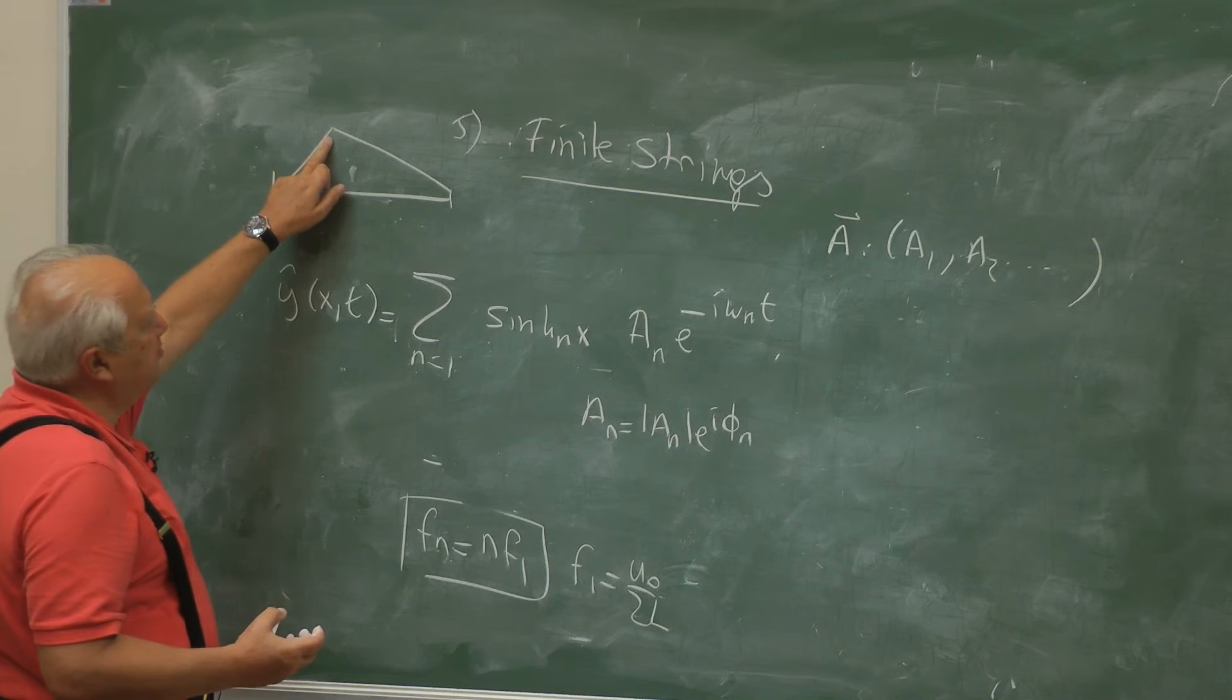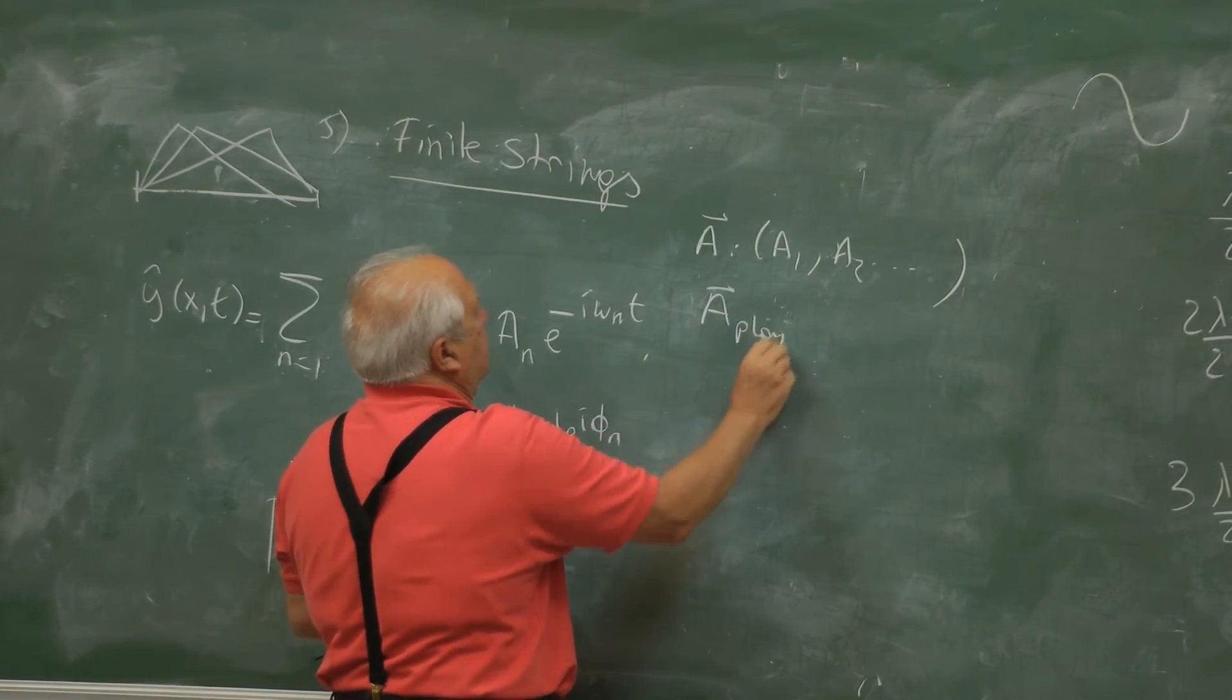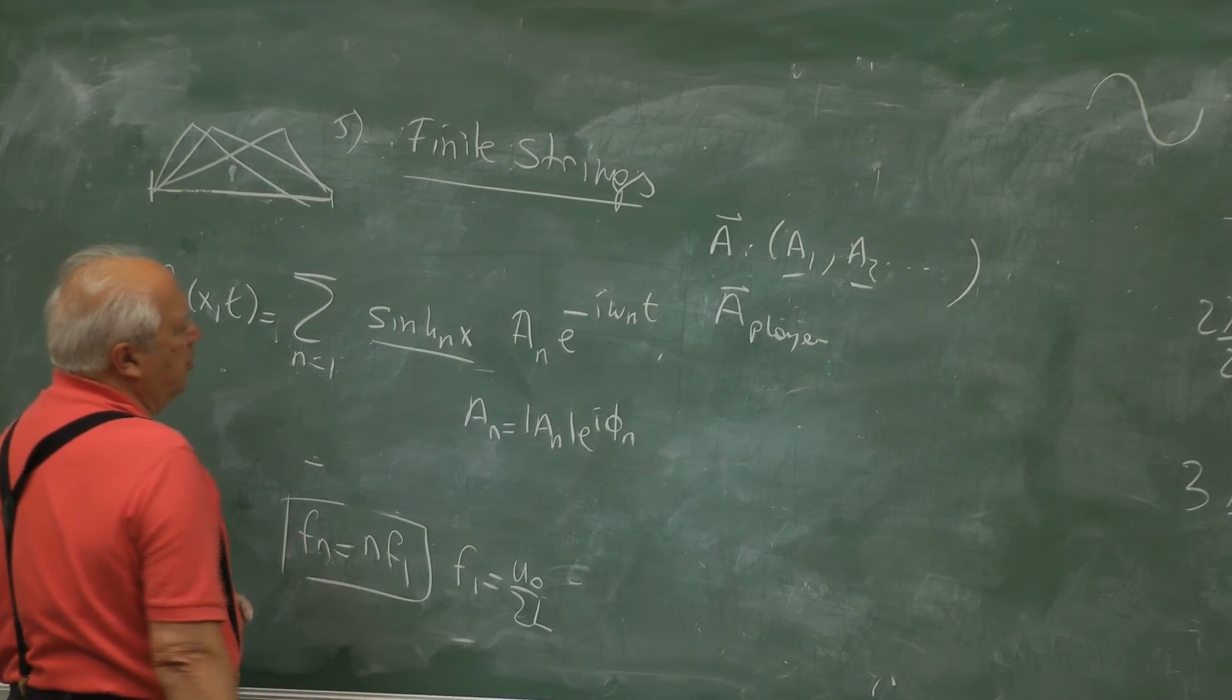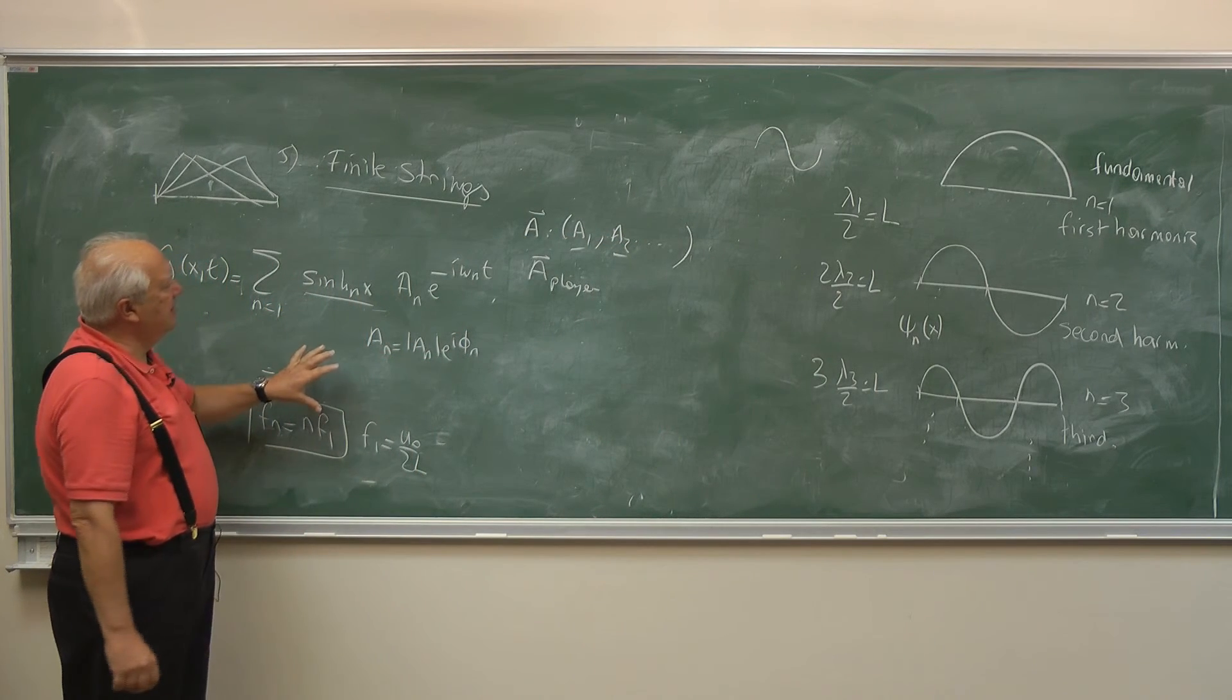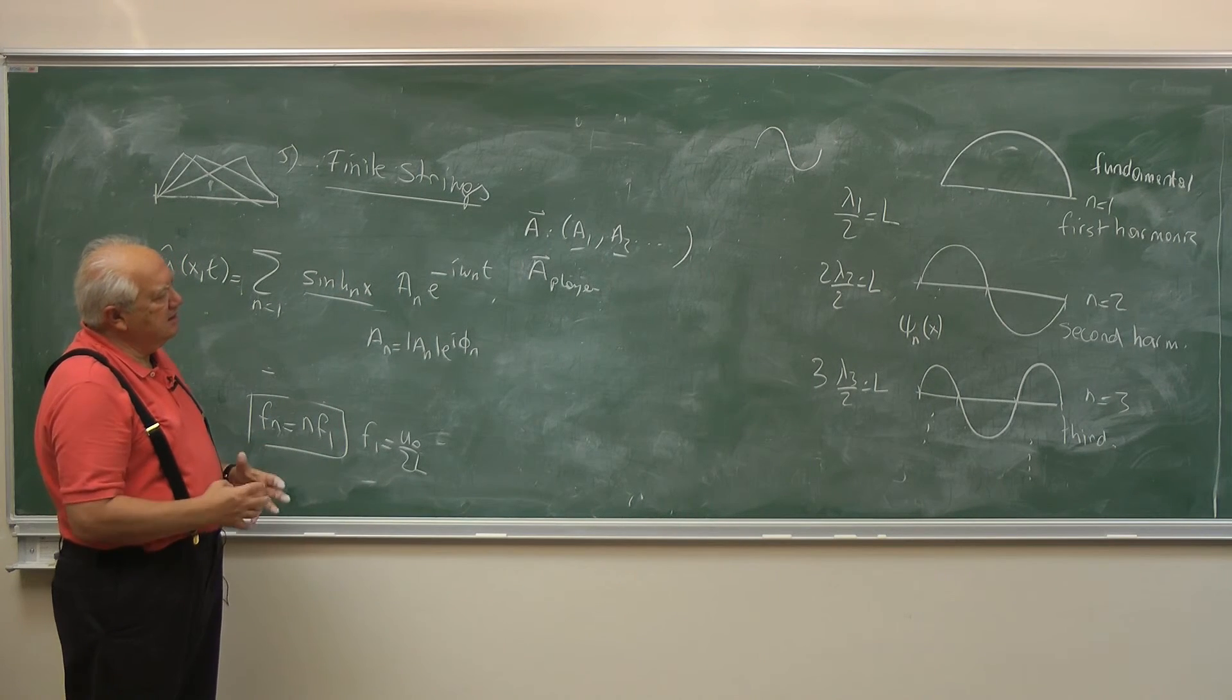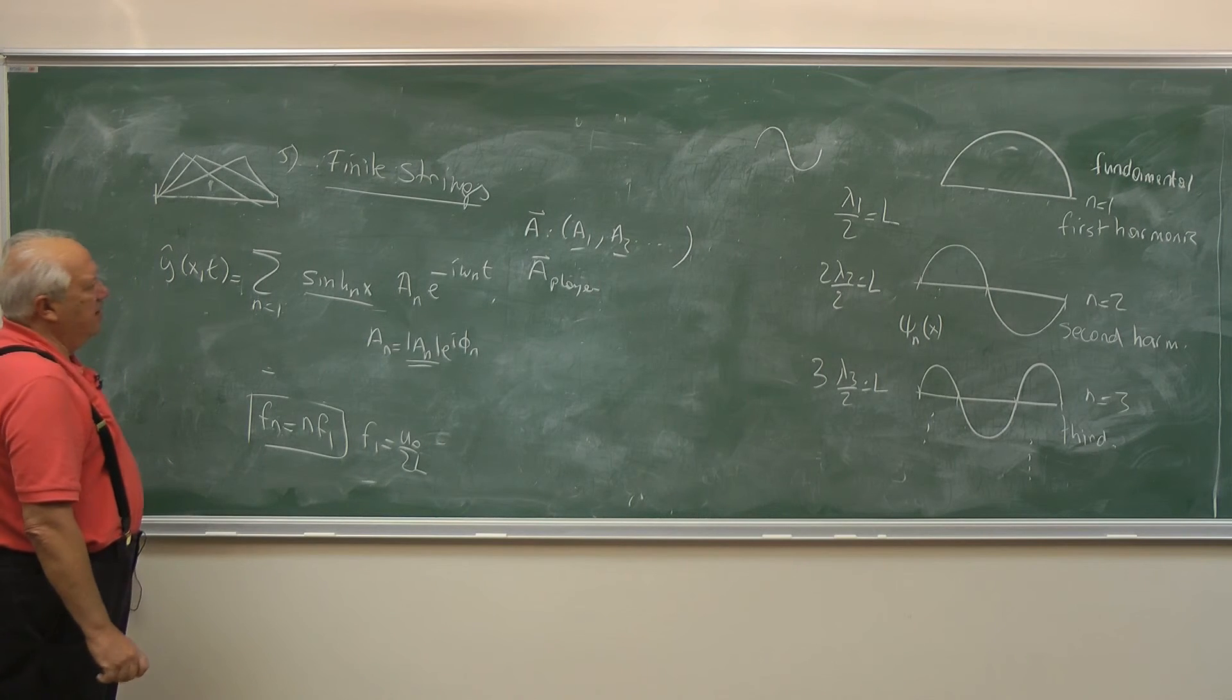That's because the way they pluck the string, whether it's like this or like that, each one has a signature of the player. Namely, the different coefficients. These are fixed. These are the normal mode shapes. They are fixed. So what you are changing in playing the guitar is basically the amount of admixture. How much of which mode you are taking in, and with what phase, and with what magnitude.